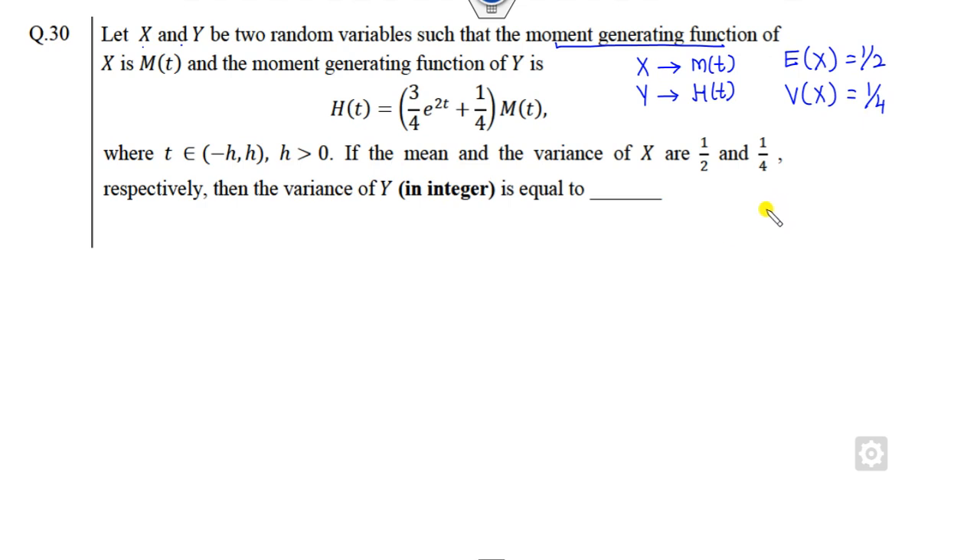First of all, you should remember that if you take the first derivative at point 0, that will give you E(X). If you take the second derivative at point 0, that will give you E(X²). So now here you can see E(X) is given to you as 1/2, that means the first derivative at 0 is given to be this. Also we know that M(0) is always 1. Now how can you find this?